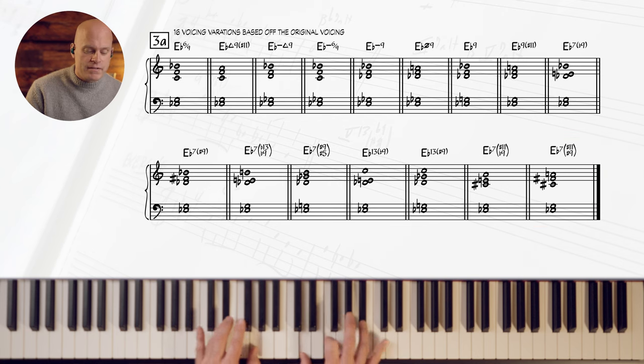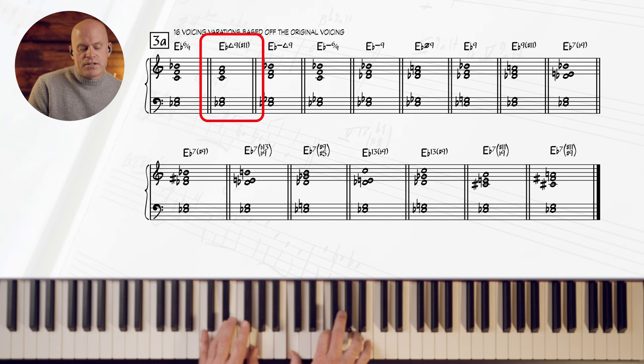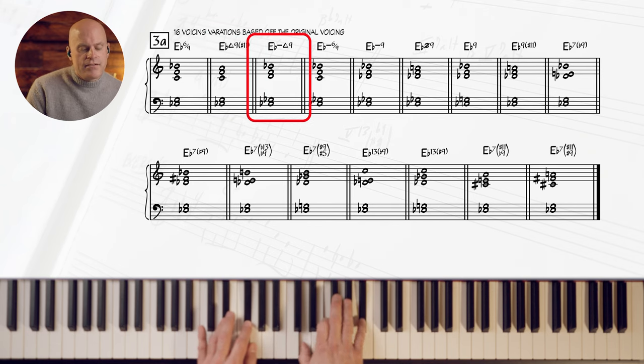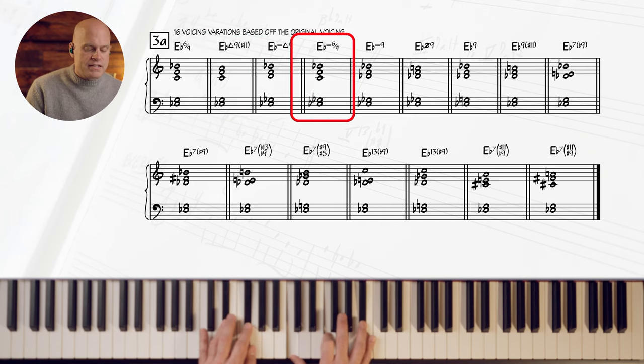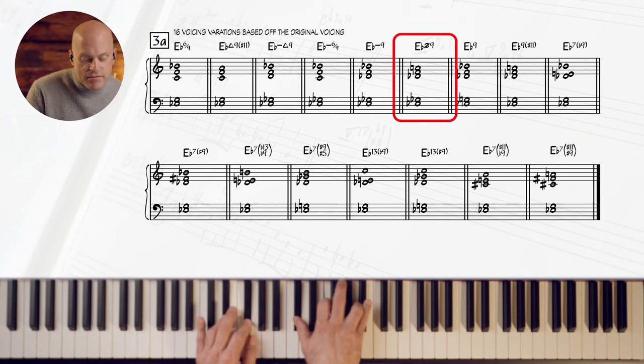Let's play them again in sequence. E flat six nine. E flat major nine sharp 11. E flat minor major seven. E flat minor six nine. E flat minor nine. E flat minor nine half diminished.